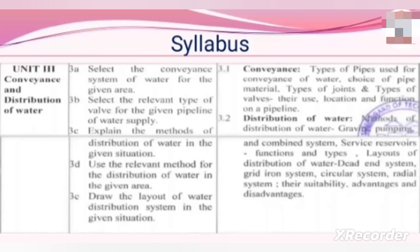Third unit is Conveyance and Distribution of Water. In this unit we will cover: types of pipes used for conveyance of water, choice of pipe material, types of joints, types of valves — their use, location and function on a pipeline. For distribution of water: methods of distribution — gravity, pumping and combined system, service reservoir — functions and types, layouts of distribution of water — dead end system, gridiron system, circular system, radial system — their suitability, advantages and disadvantages.